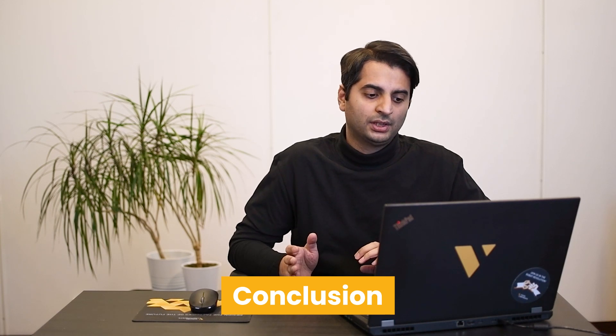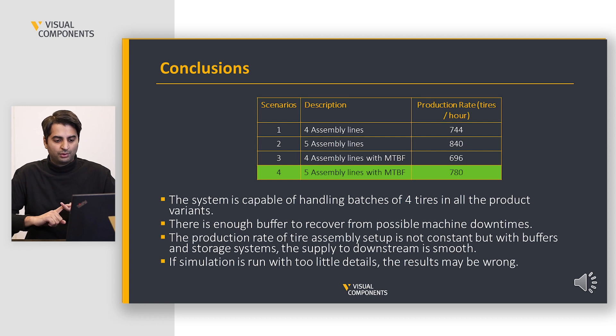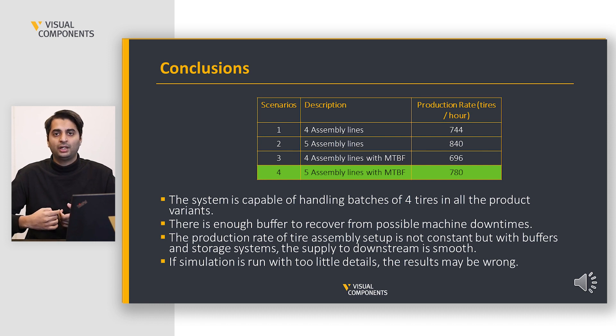In results and conclusions: we designed a system capable of handling batches of four tires across all product variants, with enough buffer to recover from possible machine downtimes. The production rate of the tire assembly setup is not constant due to the maintenance cycle, but the buffers and storage capacity ensure these breakdowns don't interrupt the downstream supply. Simulation should always be run with enough detail so results are correct. If you're interested in using Visual Components for your own use case, get in touch through the link in the description, and together we'll find a plan that fits your needs.